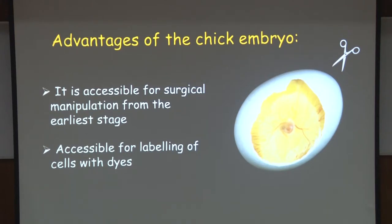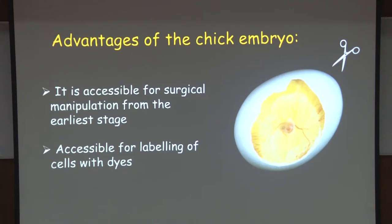This is the main advantage of the chick — not only can you look at it, you can also do many manipulations. Surgical manipulations are possible because of the large size of the chick embryo. All other organisms you heard about had the advantage of being tiny and thus allowing large numbers to be kept. Here the advantage is you can do surgery because the embryo is big enough. It is also accessible for labeling cells with dyes and for genetic manipulations.